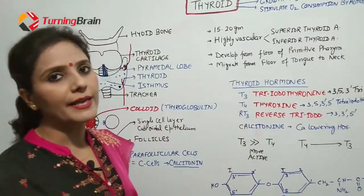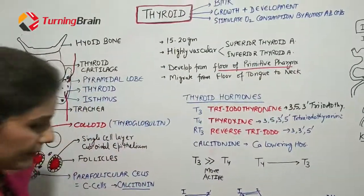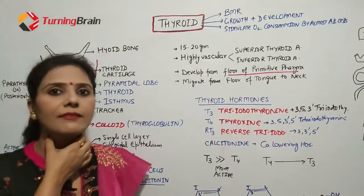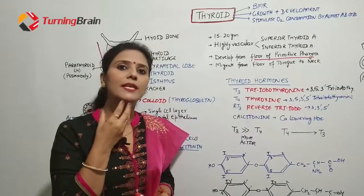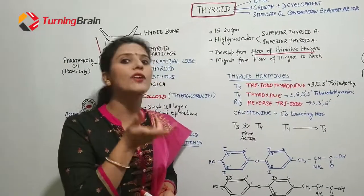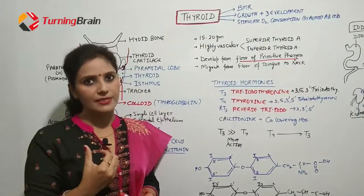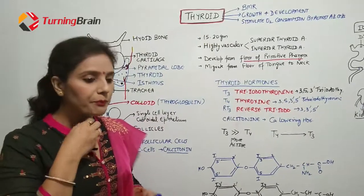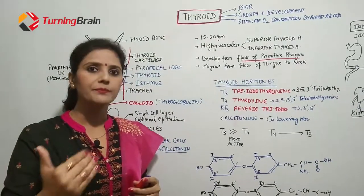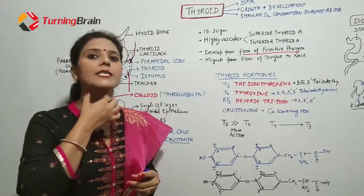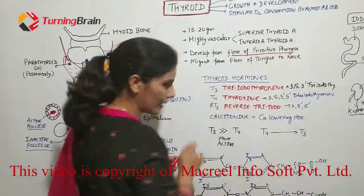The development of the thyroid gland is from the floor of the primitive pharynx — this is a very important point. It develops from the floor of the tongue. In embryology, when the embryo develops, the thyroid migrates from the floor of the tongue down to the neck.